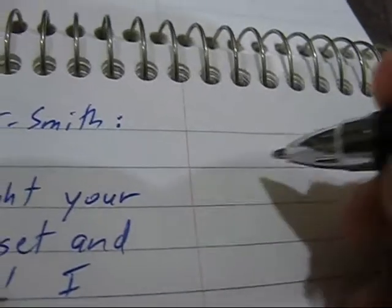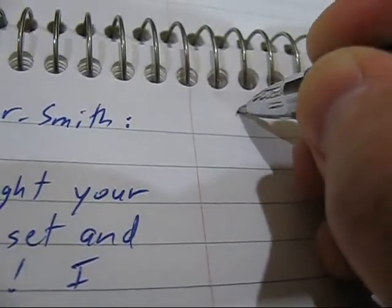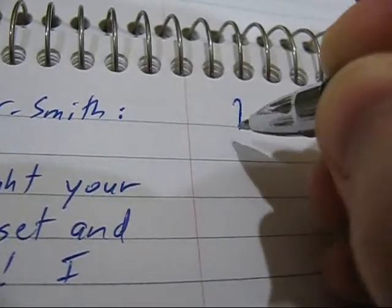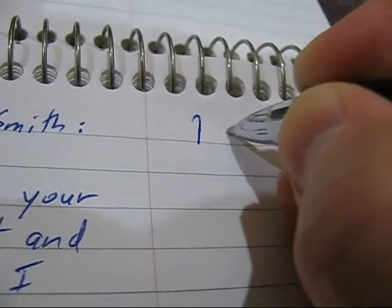But I'll break it down very slowly. So Dear Mr. Smith. Dear is a letter D with a hook in it written on the line. That's the abbreviation for Dear. Mr. is another abbreviation.